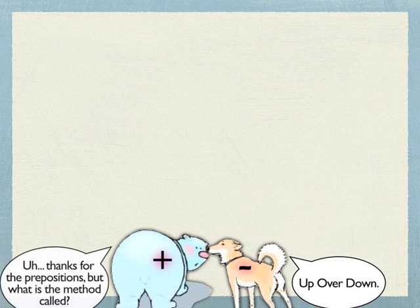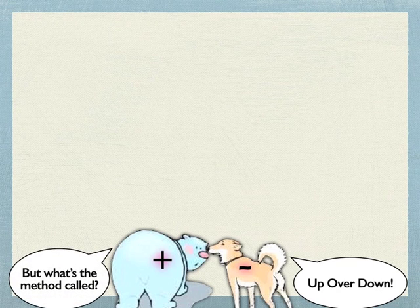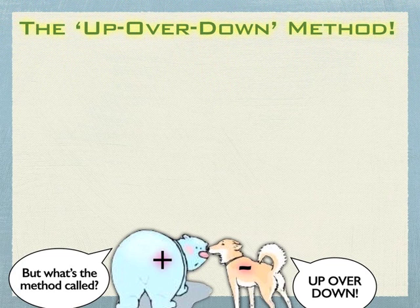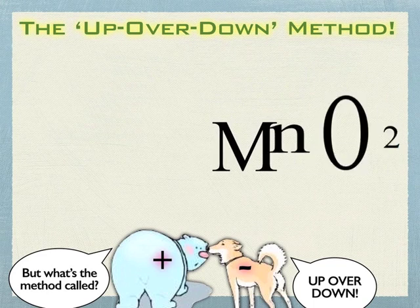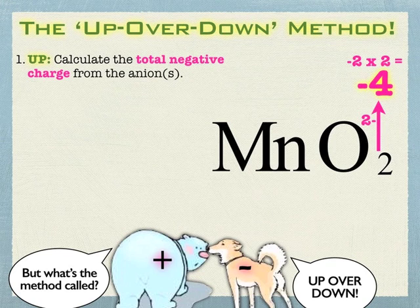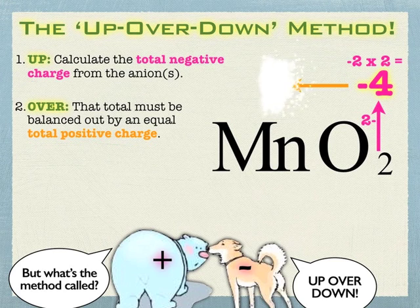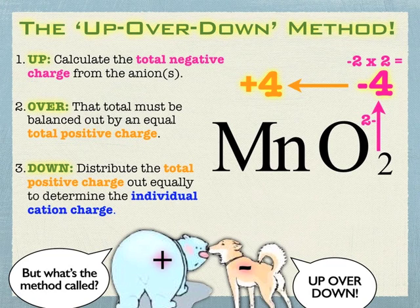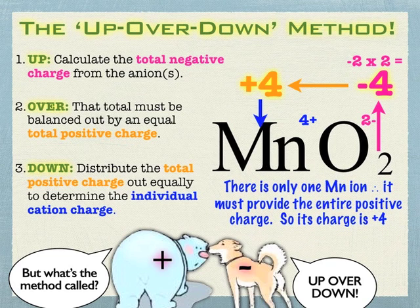The technique is called 'up over down.' You don't have to use it — you can visually work through it or reverse criss-cross with careful afterthought — but this is a nice way to start. When I say 'up,' look at the total negative charge: if you have two negative-2 charges, that's negative 4. 'Over' means that negative 4 must be balanced by a positive 4. Then 'down' means distribute that plus 4 among your cations. If there's only one manganese, it gets the full plus 4 charge; if there are two, they each get plus 2. That's the basic idea: find your total negative charge, balance it with a total positive charge, then distribute it.